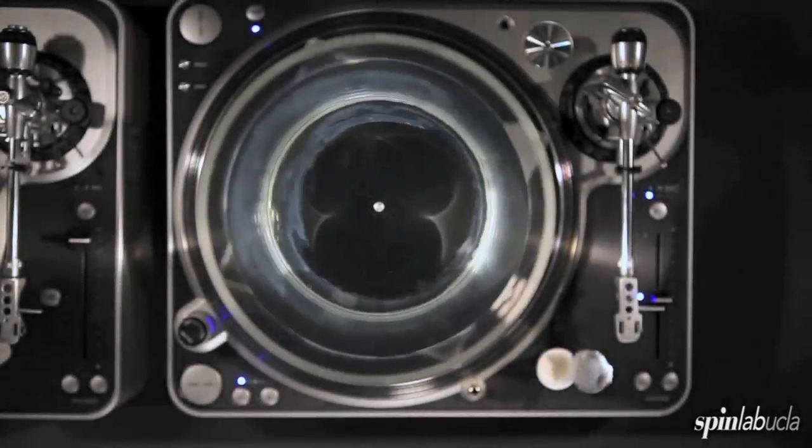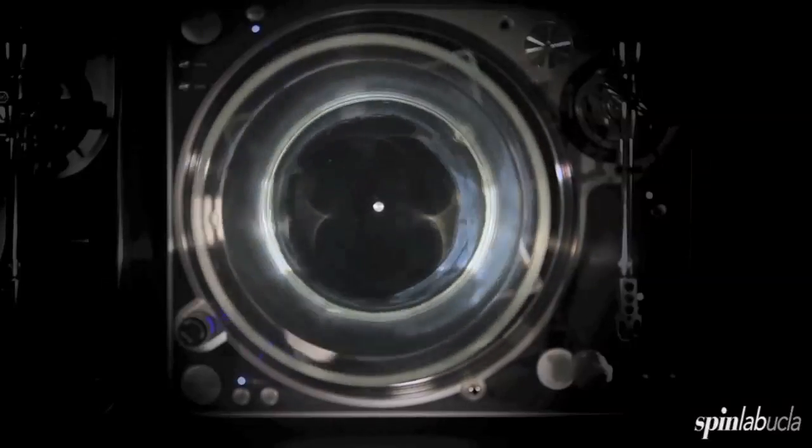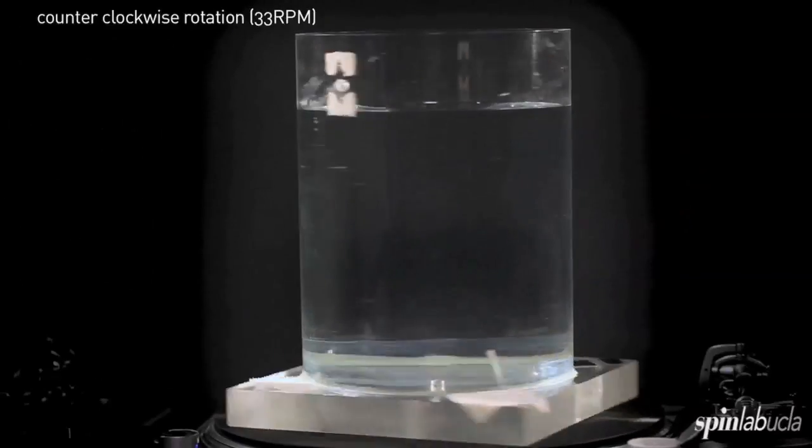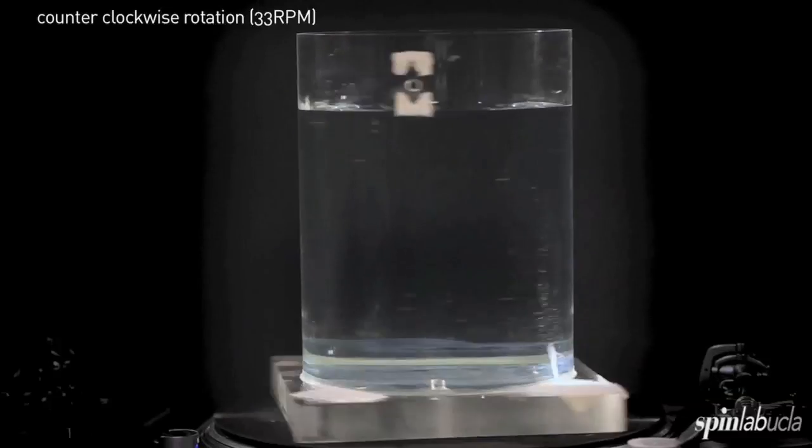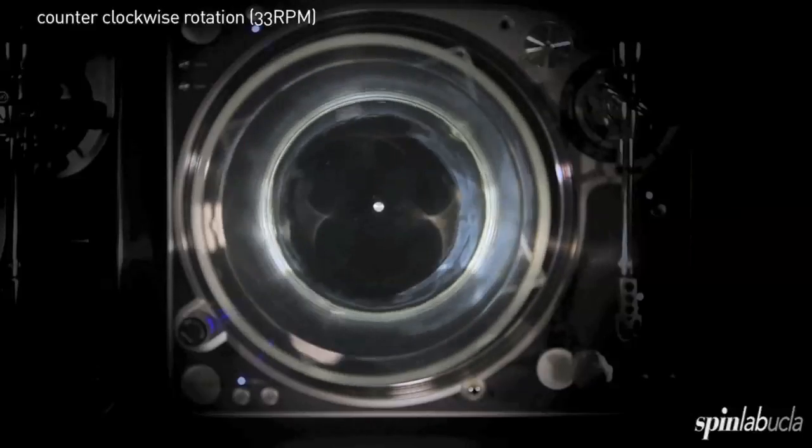So now to compare what we saw in the non-rotating tank to a case where there is rotation, we've set up a record player, as you see here, and we've got a comparable tank of water on it. And we've let that tank of water spin up so that all the fluid is moving at the same rate as the record player. So all the fluid mechanics knows about the rotation of the table. And now we're going to do the exact same experiment where we pour in the creamer.